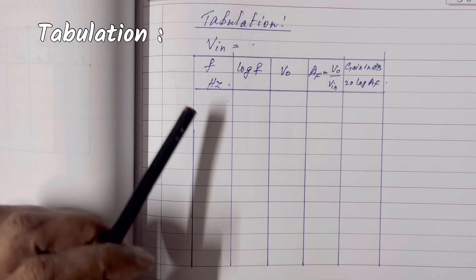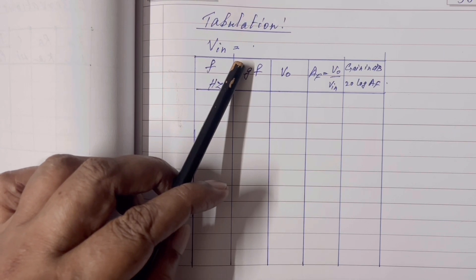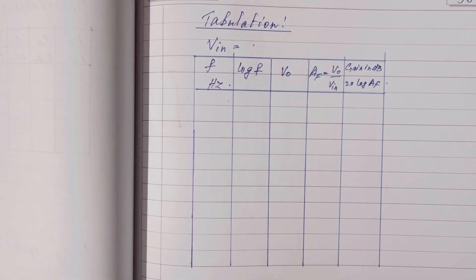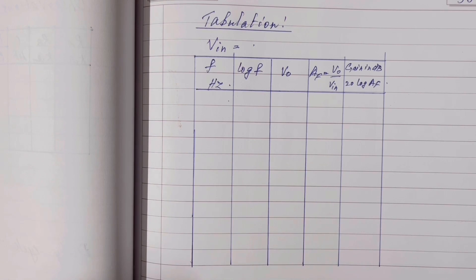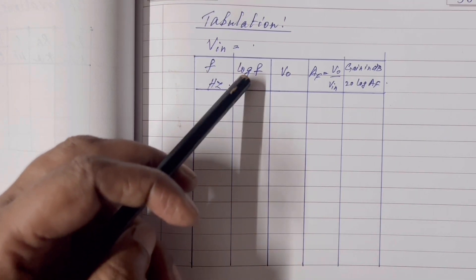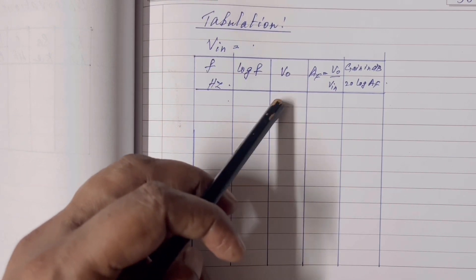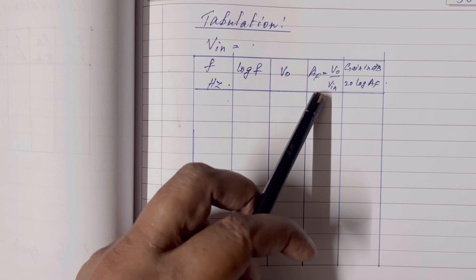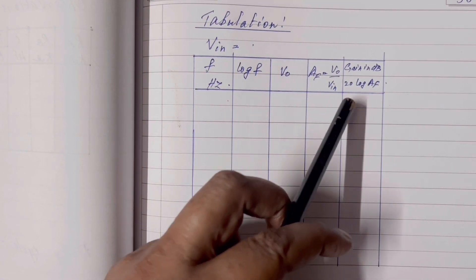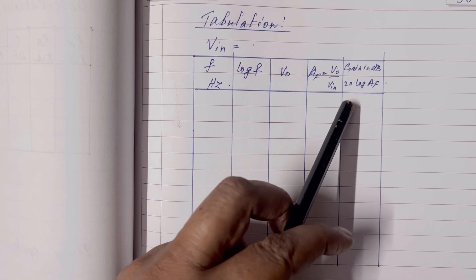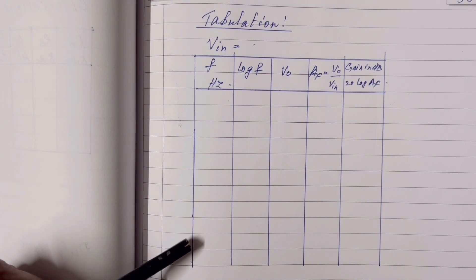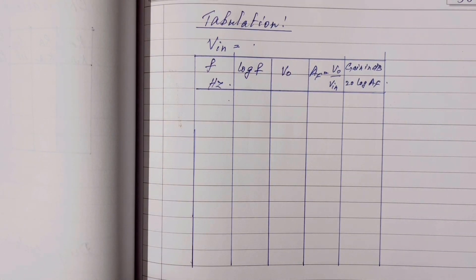In the tabulation, first write V input — in this experiment, V input is taken as 2 V. The first column records frequency, starting from 600 Hz and increasing to 700 Hz and so on. The second column records the log of frequency. The third column records output voltage measured from the CRO. The fourth column records gain using the formula V output divided by V input. The last column records gain in dB using the formula 20 log AF. Since frequency ranges from 600 to nearly 2000 Hz, plot gain in dB versus log of frequency.